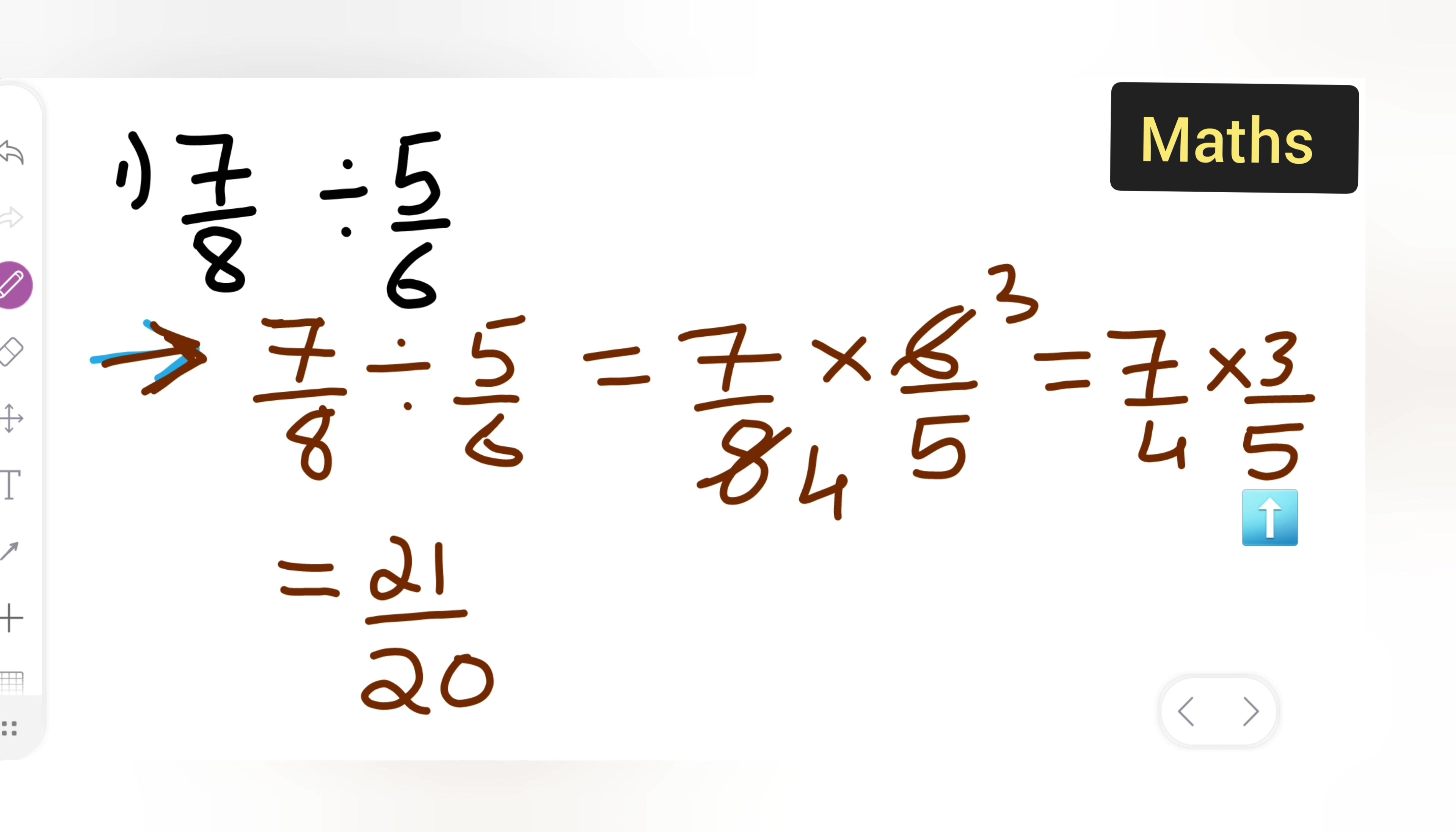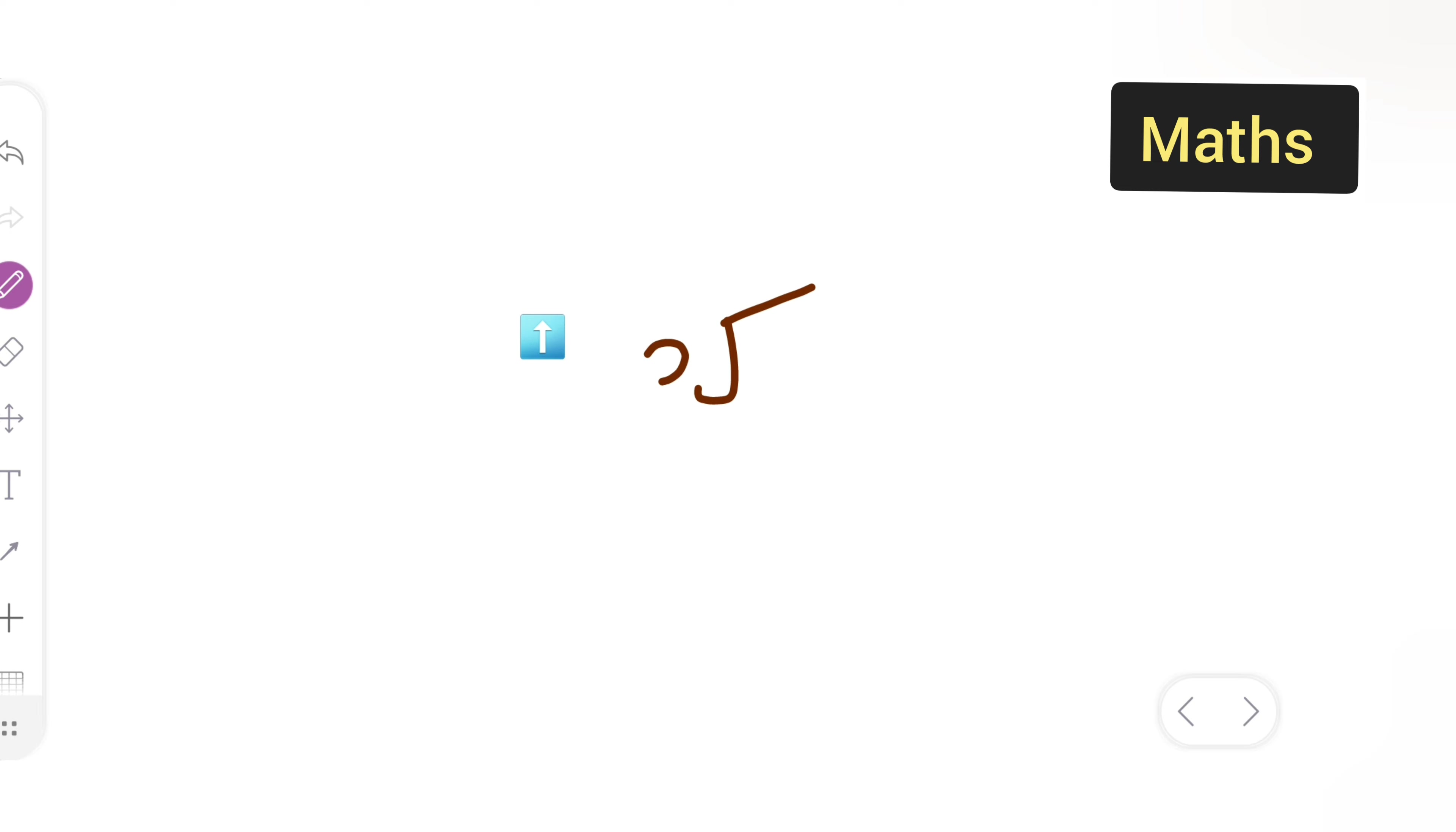Now you all can write this in a mixed fraction form. You can divide it like 20 divided by 21. So 20, your answer will be 1. So basically this is the quotient, this is the remainder, and this is the dividend.